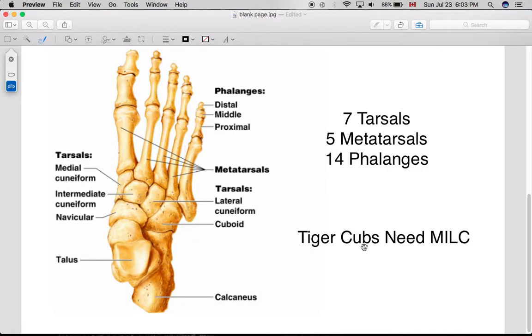Now this mnemonic, tiger cubs need MILC, is from superior to inferior, medial to lateral. And it goes talus, tiger, calcaneus, navicular, medial, intermediate, lateral cuneiform, and then cuboid.